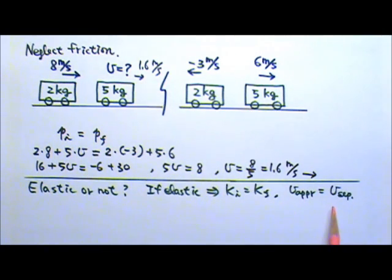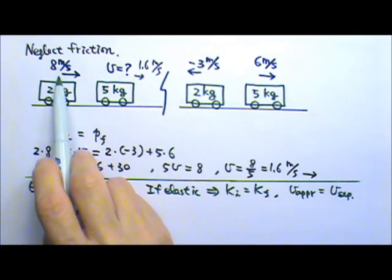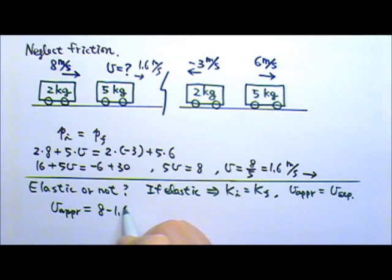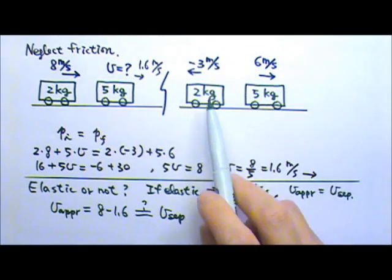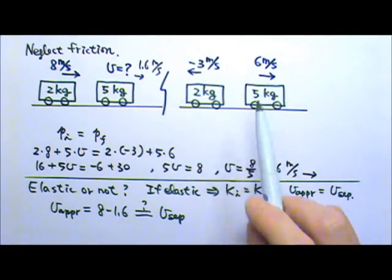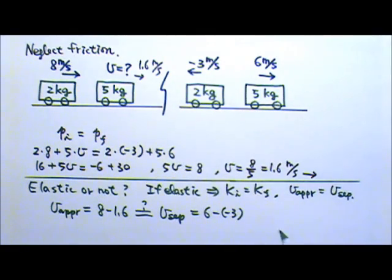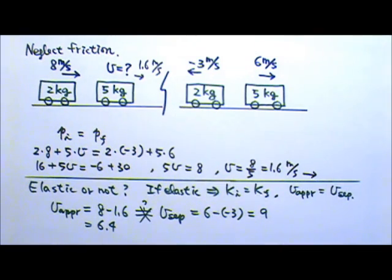This would be an easier calculation. Before the collision, the approaching speed is the difference in velocities: 8 minus 1.6, which equals 6.4. After the collision, the separating speed is the difference in velocities: 6 minus negative 3, which equals 9. These are not equal — 9 does not equal 6.4 — so the collision is not elastic.